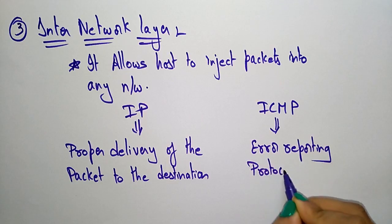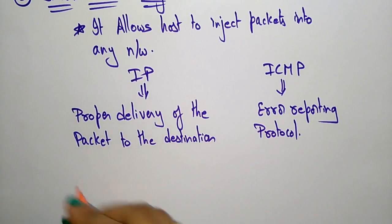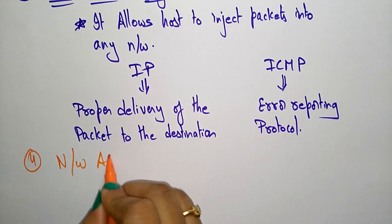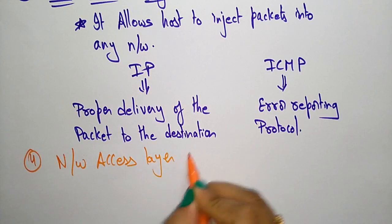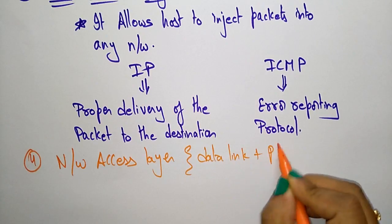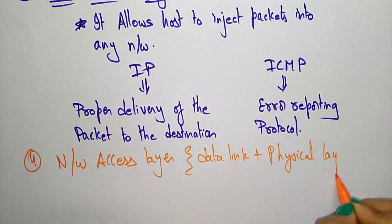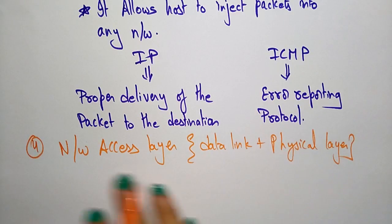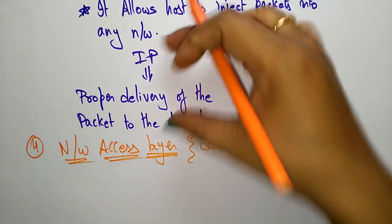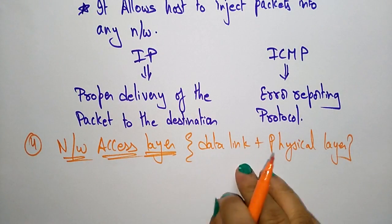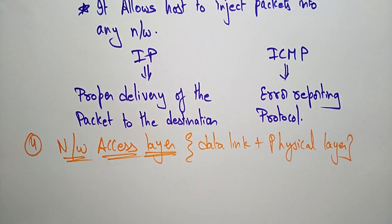Now coming to the last layer — the fourth one — the network access layer. The network access layer is also called the data link plus physical layer. It is called the network access layer because we are accessing the network, and to access the network we need data link and physical layer support.